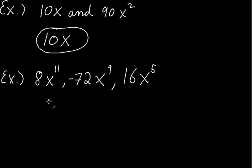Let's look at this example. We have 8x to the 11th, negative 72x to the 9th, and 16x to the 5th. Out of these three numbers, 8, negative 72, and 16, what's the largest common factor we can find? Well, I think the greatest common factor between those numbers would be 8.